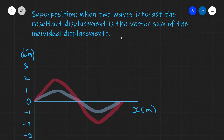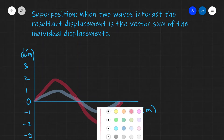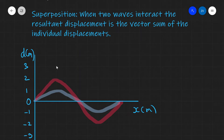Starting off with the principle of superposition. When two waves interact, the resultant displacement is the vector sum of the individual displacements. For instance, we have two waves here — this one has an amplitude of about two meters and this one has an amplitude of about one meter. At any point, the resultant displacement will be the sum of the individual displacements. The resultant wave should have an amplitude of three, because two plus one gives us three.